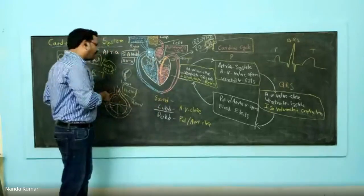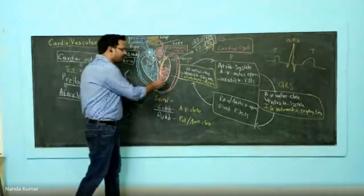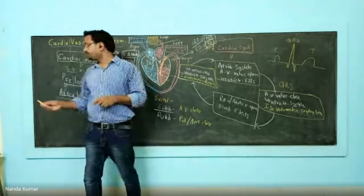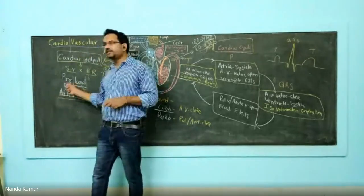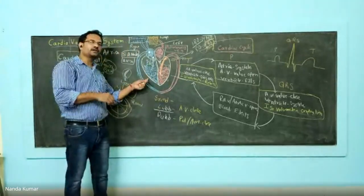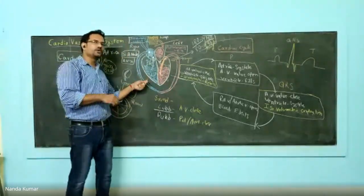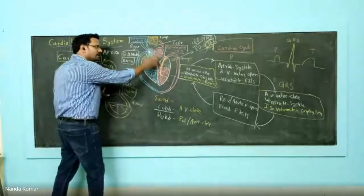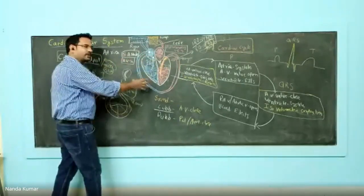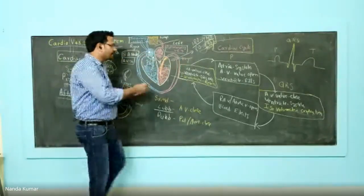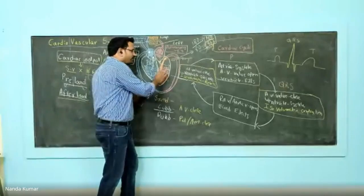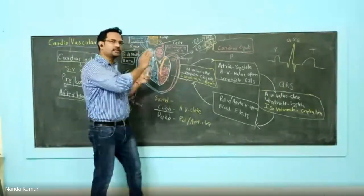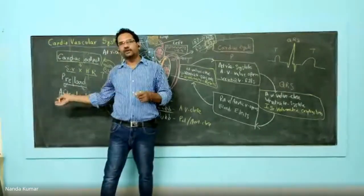Afterload is completely related to the left ventricle, whereas preload is related to the right ventricle. Before contraction, the load in the right ventricle is preload. When it contracts and has to pump blood to the aorta, that is related to afterload.